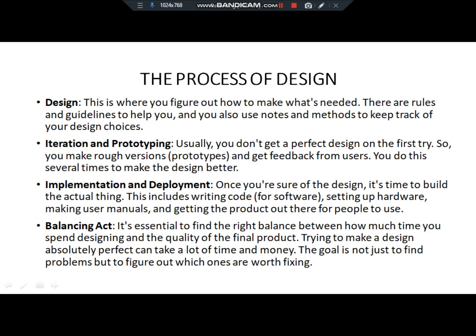In the process of designing, we have design, iteration, prototyping, implementation, deployment, and planning. This is where you figure out how to make what is needed. There are rules and guidelines to help you, and you also use notes and methods to keep track of your design choices. We can also study specific documentation and create a design model, check the model, and if needed, create another model.